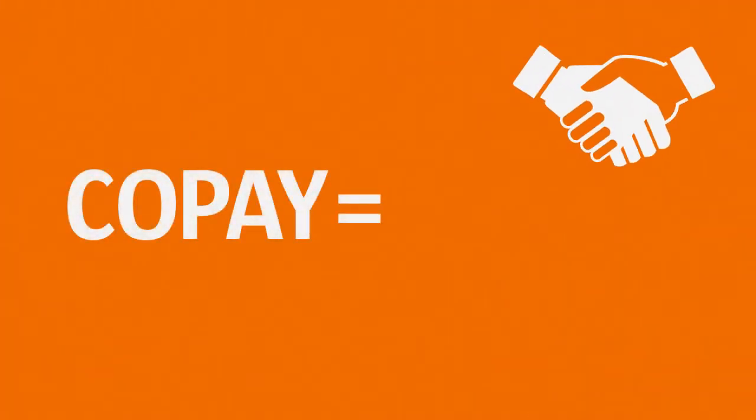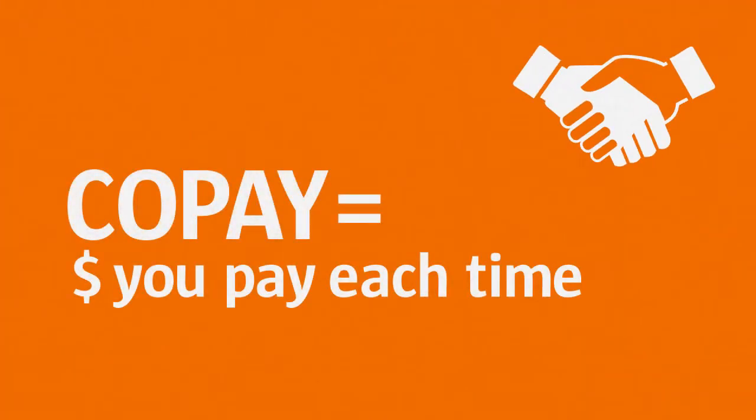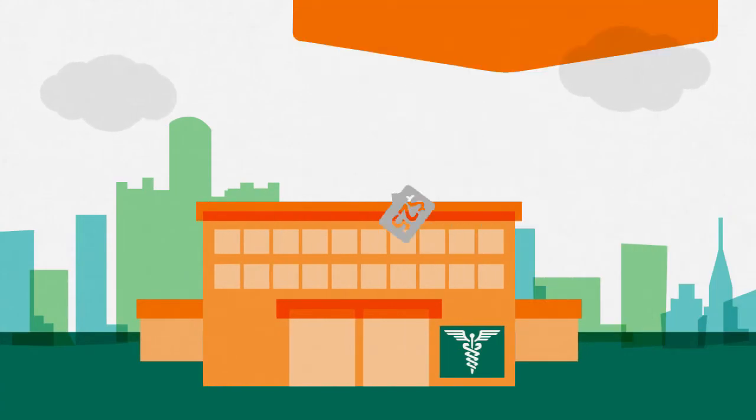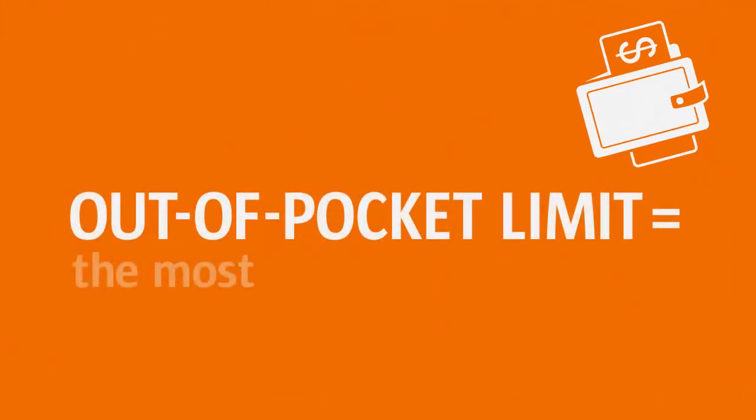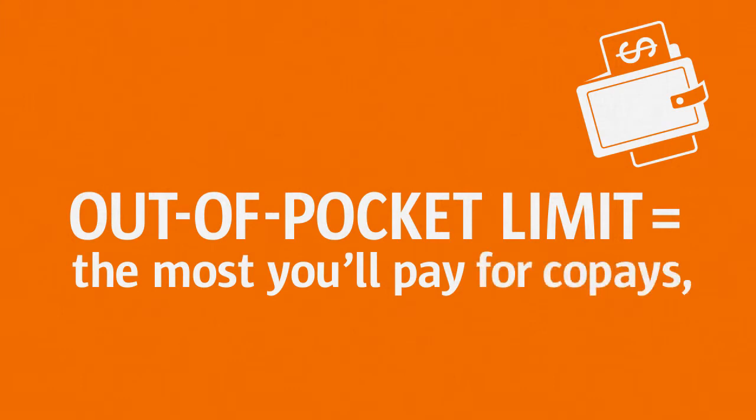A co-pay is the fixed amount you pay each time for a health care service, like doctor visits. And the out-of-pocket limit is the most you'll pay for the combined total of all co-pays, co-insurance, and deductibles in a benefit period, which is usually a calendar year.